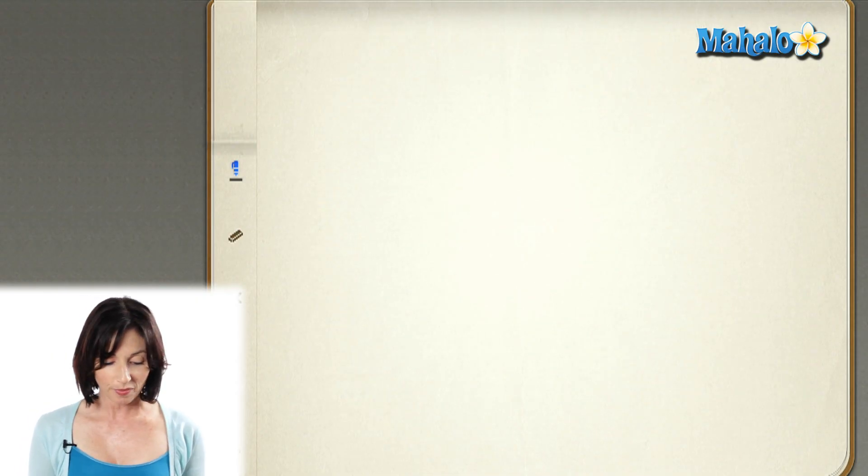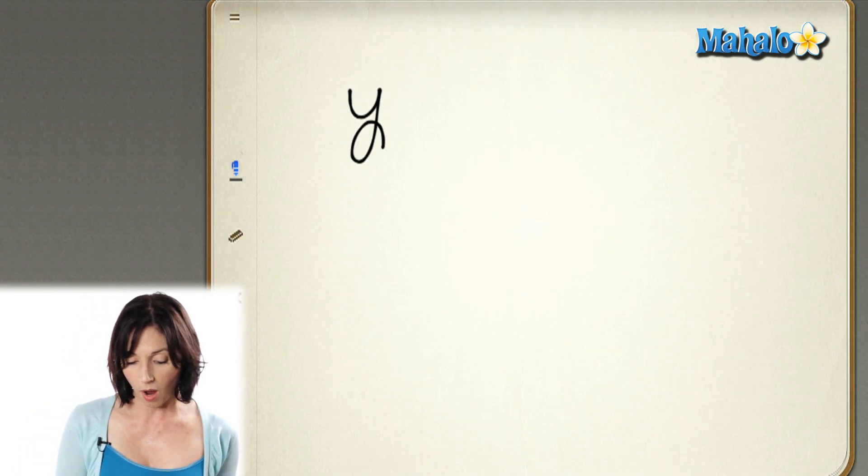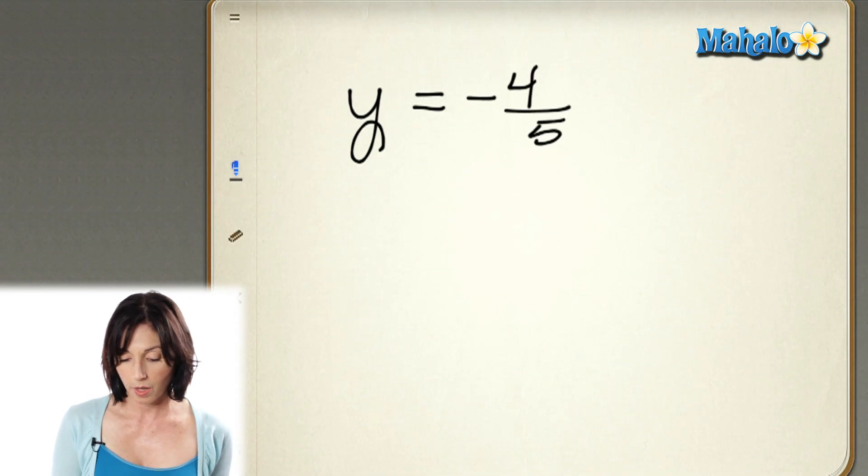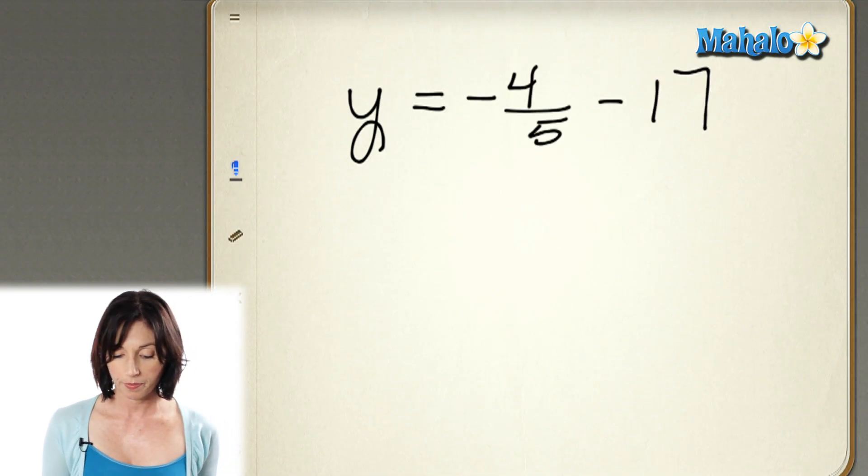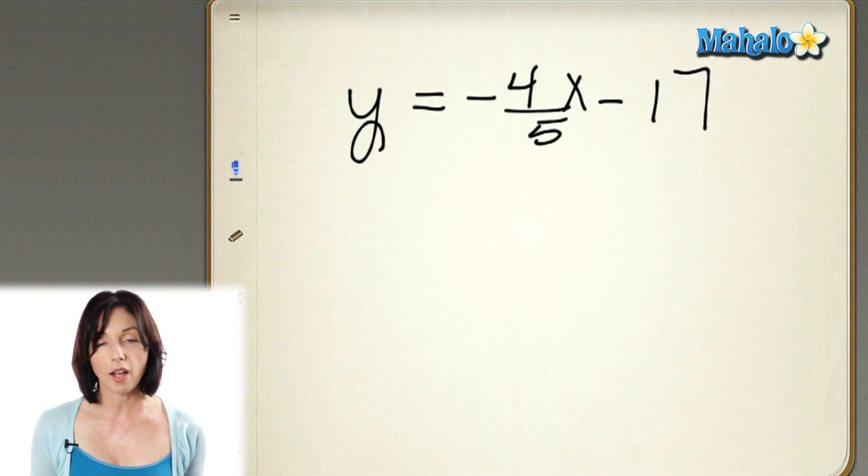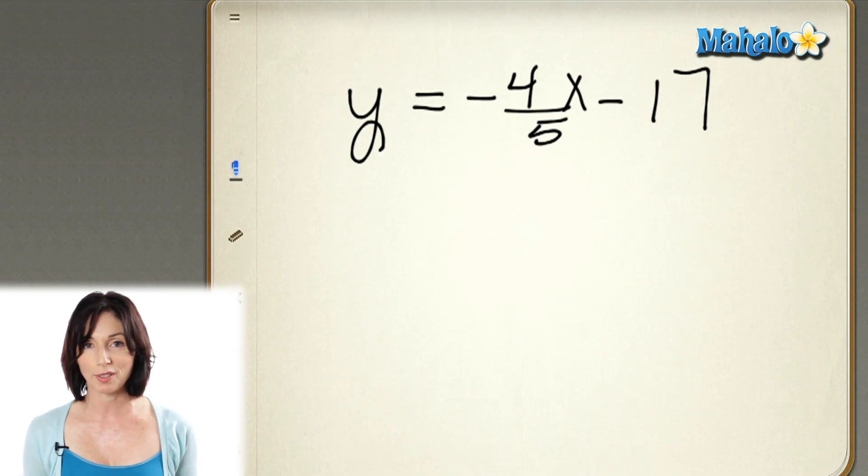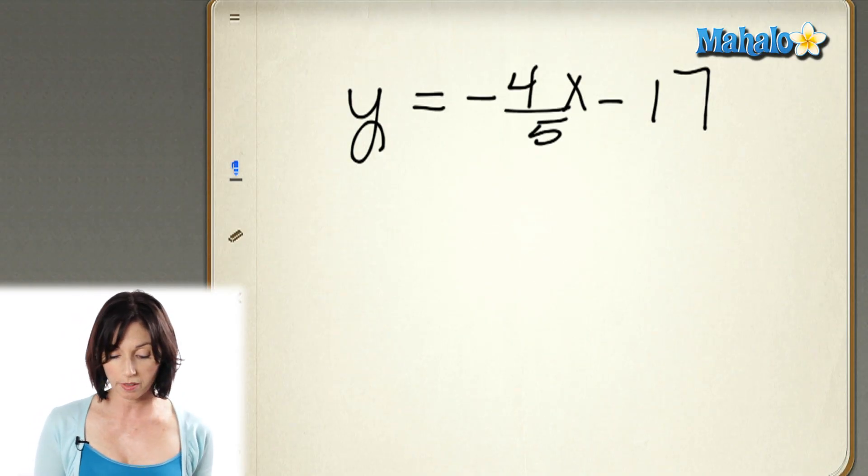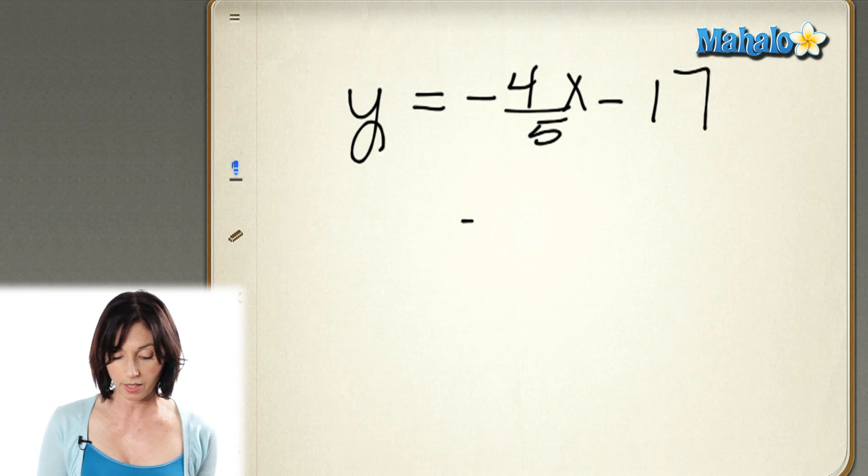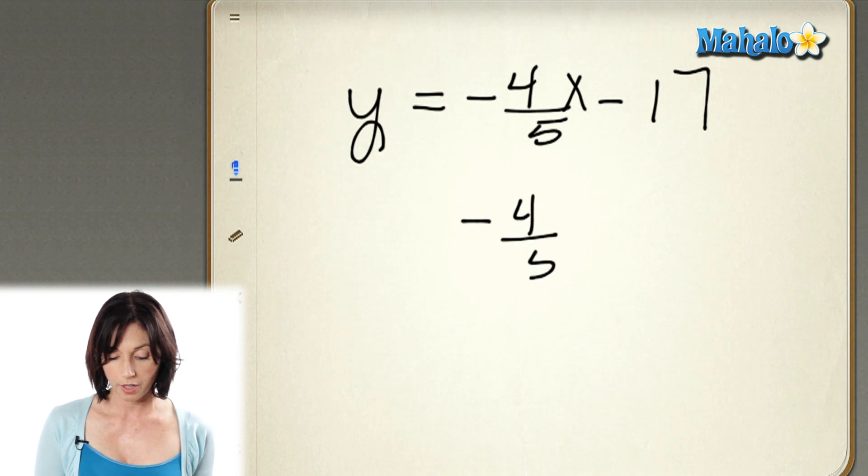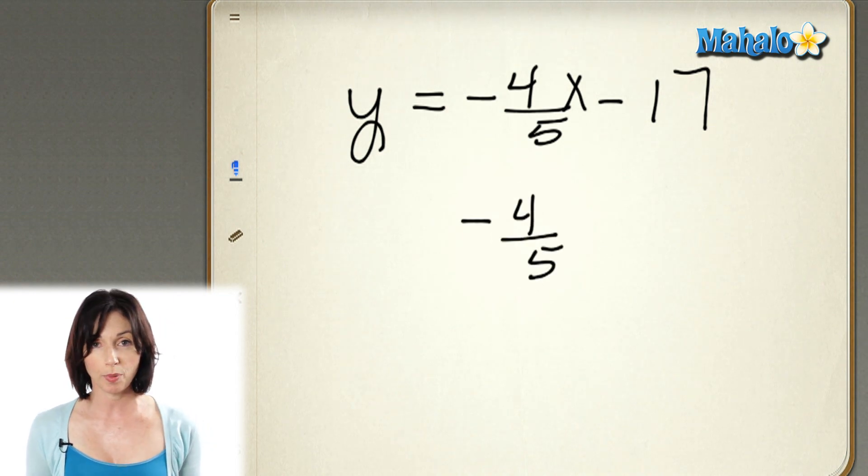Let's do one more. Let's say I have y equals negative 4/5 x minus 17. And let's say I need to find the slope of a line that's perpendicular to this one. My slope here is the number multiplying x. It's negative 4/5. So, I want to find its negative reciprocal. So, I change its sign and flip it upside down.